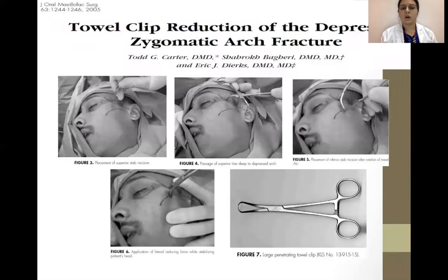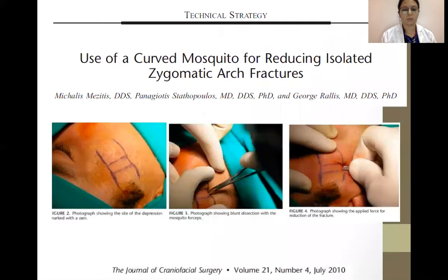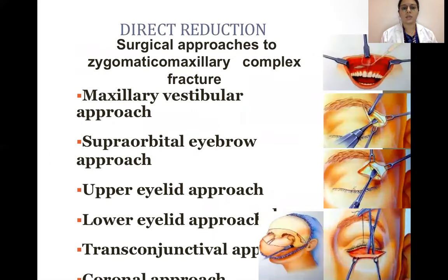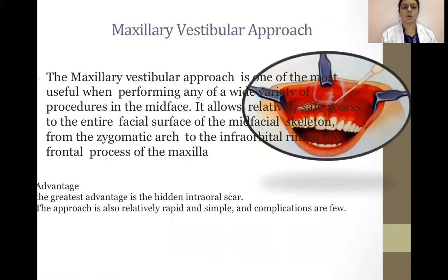Tal clip reduction is also mentioned in a few articles. A curved mosquito can also be used for reducing isolated zygomatic arch fractures. For direct reduction, surgical approaches include the maxillary vestibular approach, supraorbital eyebrow approach, upper eyelid approach, lower eyelid approach, transconjunctival approach, and coronal approach.